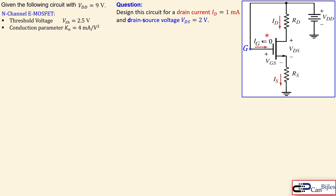We know the required MOSFET parameters and the DC voltage. The design requirement is a drain current of one milliamp and a drain-to-source voltage VDS of two volts. This is the reverse of previous examples where we had resistor values and calculated currents and voltages — here we need to find the component values.